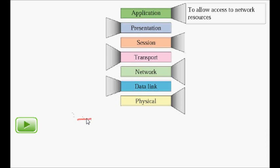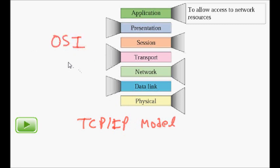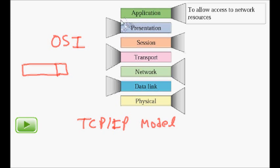In our next class we will see about the TCP/IP model. This was about the OSI model, and three key concepts: encapsulation — where data and header from an upper layer become the data for the lower layer; layered architecture — where each layer provides services to the one above it and uses the services of the one below it; and peer-to-peer processes. I hope you understand this. Next lecture we will learn about the TCP/IP model. Thanks a lot.